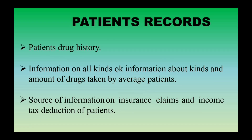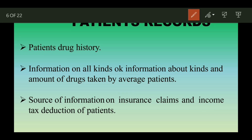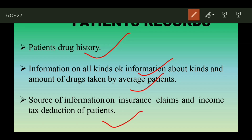Next is the patient record. Patient records should include the history of the patient's drug use, and information on all kinds and amounts of drug taken by the patient — you should know the average amount of drug they are taking. Patient records also include information on insurance claims and income tax deductions of the patient, so how much income tax deduction applies and details about the insurance claim.